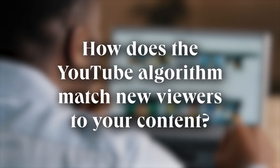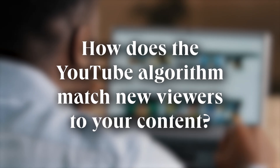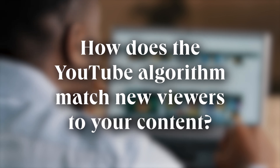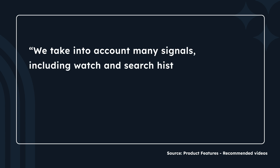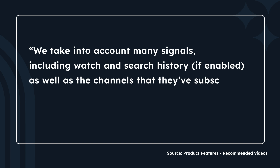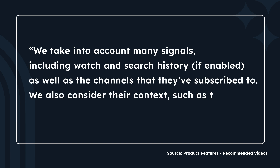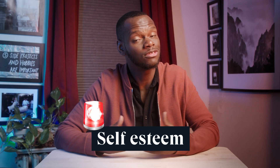So how does the YouTube algorithm match new viewers to your content? Well, in the words of YouTube themselves: "We take into account many signals, including watch history and search history if enabled, as well as the channels that they've subscribed to. We also consider their context, such as country and time of day."